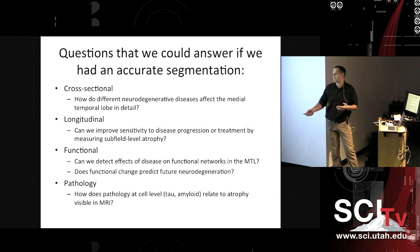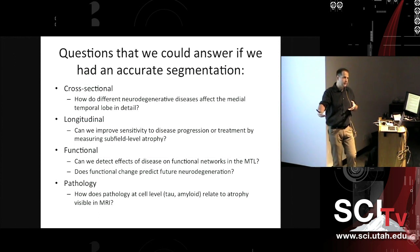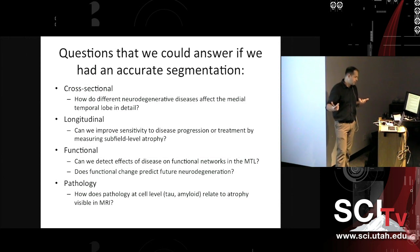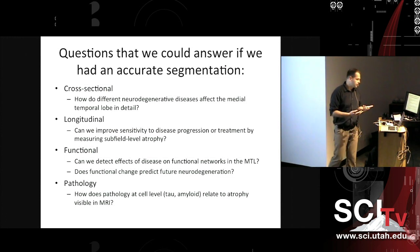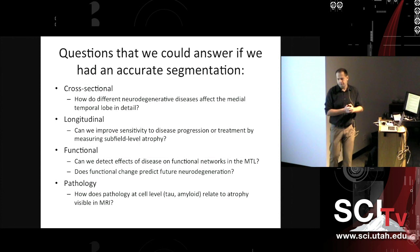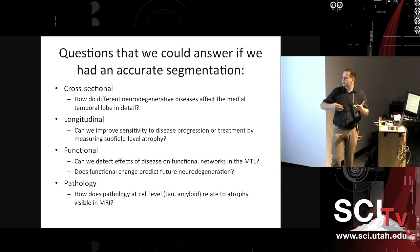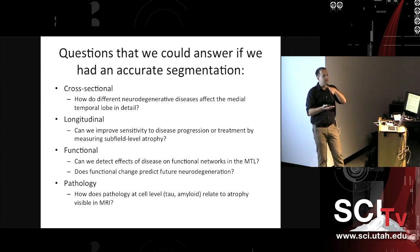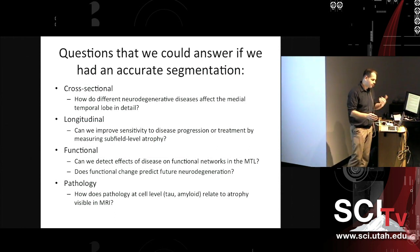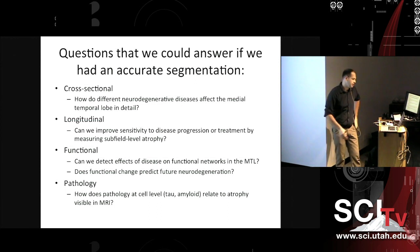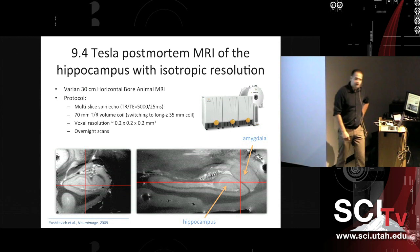Another very interesting thing this will allow us to do is look at how the distribution of pathology actually relates to the macroscopic changes we can see in MRI. In histology space, we can stain for pathology, we can stain for tau protein — which is what forms in cells before cells die in Alzheimer's disease. We can map this distribution of neurofibrillary tangles with tau protein into in vivo space, and then see how the hippocampus shrinking in the in vivo brain relates to that distribution of pathology.